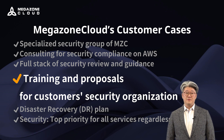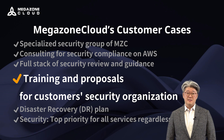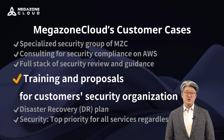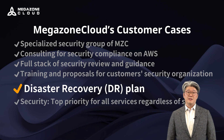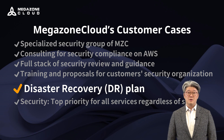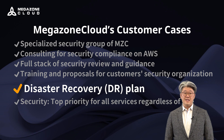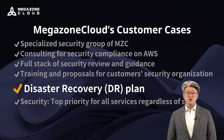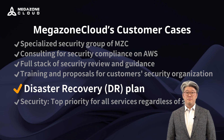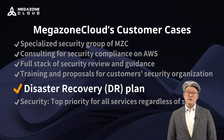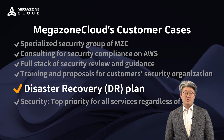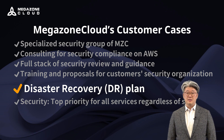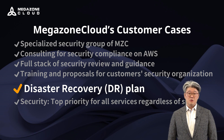Furthermore, we provided comprehensive training to the client's in-house team on best practices for maintaining security on AWS. This included how to regularly audit and update security measures, ensuring that they remain ahead of emerging threats. Additionally, we worked closely with the client to develop a disaster recovery plan. This plan ensured that in the event of a security breach or data loss, they could quickly recover critical data and maintain business continuity. Through our intervention, the client not only met but exceeded their compliance requirements. This project not only showcased our expertise in AWS security, but also demonstrates how even businesses in highly regulated industries like fintech can leverage the cloud securely and efficiently.